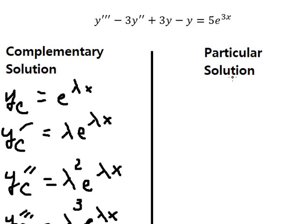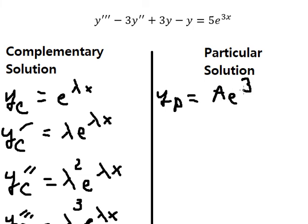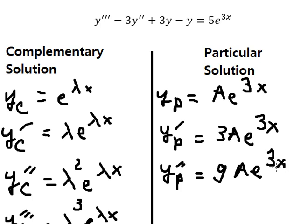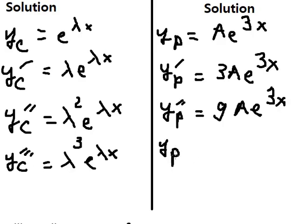For the particular solution, since the right-hand side is e^(3x), we let yb equals A e^(3x). The first derivative of yb is 3A e^(3x), the second derivative is 9A e^(3x), and the third derivative is 27A e^(3x).